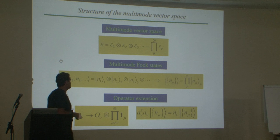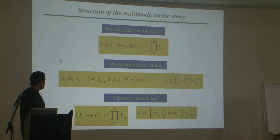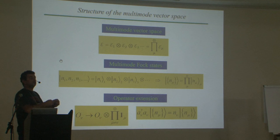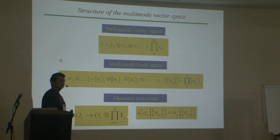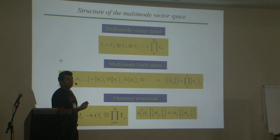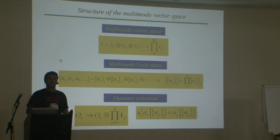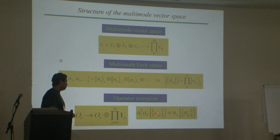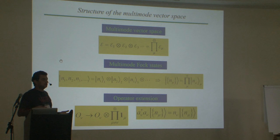This multi-mode Fock state is often used as a basis for the multi-mode vector space of the electromagnetic field. The operators acting on the state space of each mode are extended to the whole multi-mode space, and we identify these Fock states as eigenvectors of the number operator — the operator that reflects the number of excitations in each mode. This quantization is something different from first quantization, because the number of particles is itself a quantum operator.